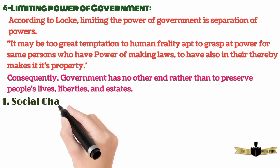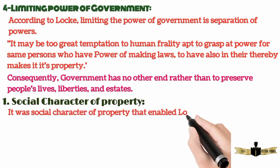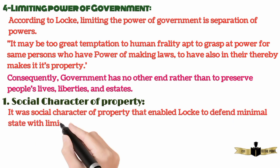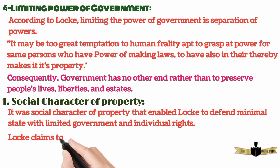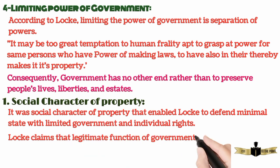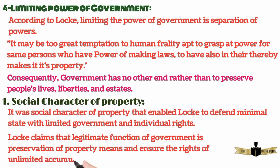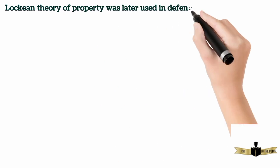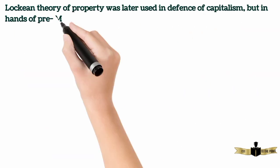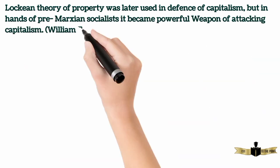8. Social character of property. It was the social character of property that enabled Locke to defend a minimal state with limited government and individual rights. Locke claims that the legitimate function of government is the preservation of property, meaning ensuring the rights of unlimited accumulation of private property. Locke's theory of property was later used in defense of capitalism, but in the hands of pre-Marxian socialists it became a powerful weapon for attacking capitalism.